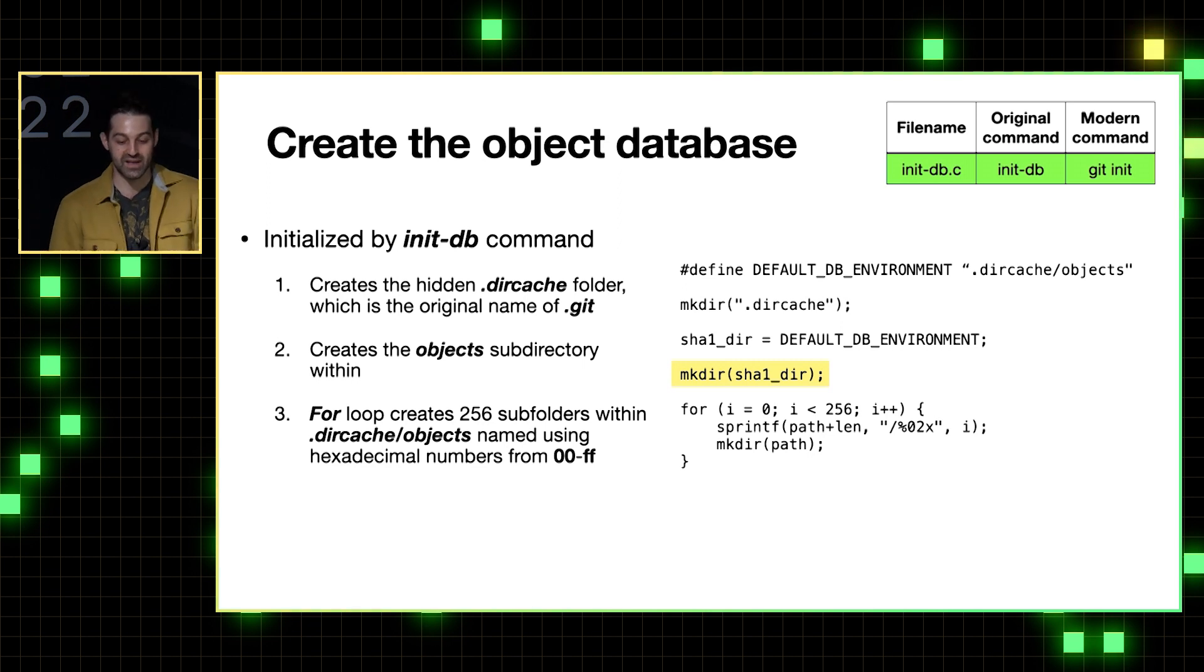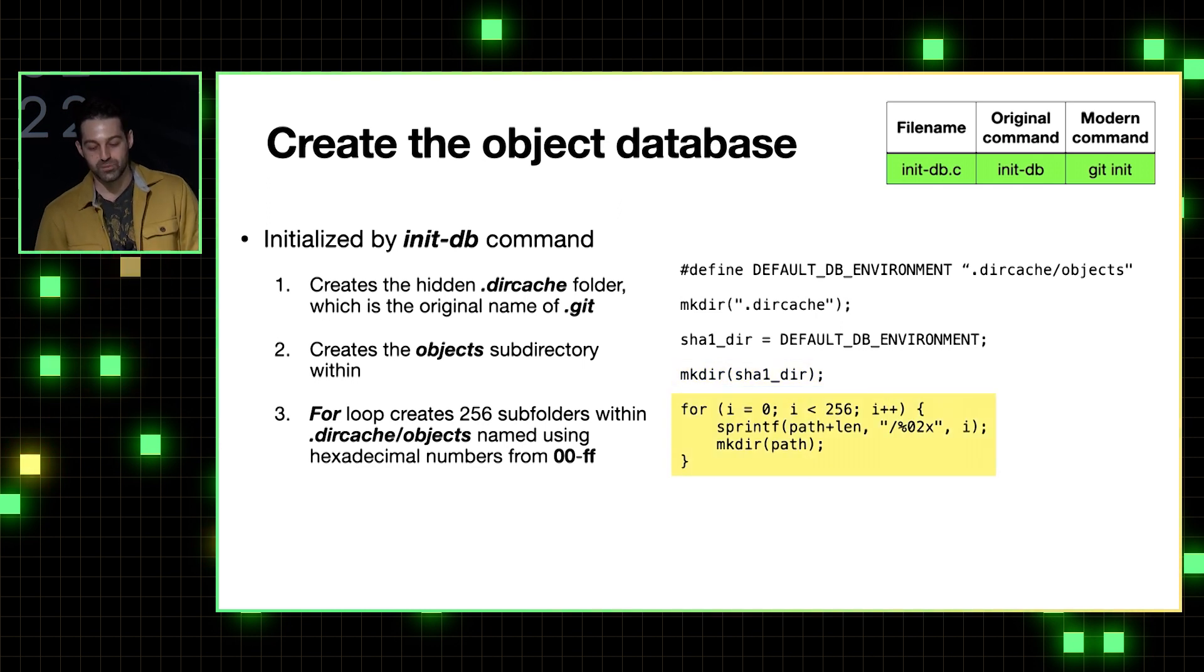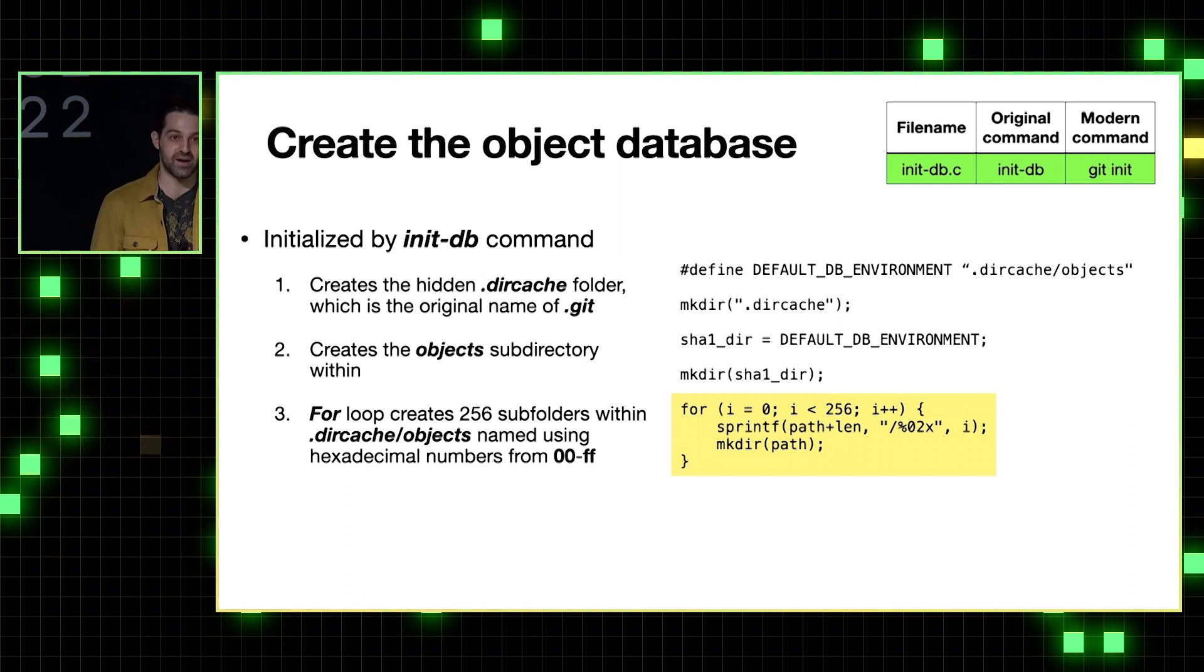So next, the code uses makedir again to create a subdirectory within dircache called objects. And then the code uses this simple for loop to create 256 subfolders within that, which are actually used for storing the objects. And when Git creates an object, it will calculate its hash, its SHA1 hash, and use the first two characters of that hash to organize the object into the corresponding folder.